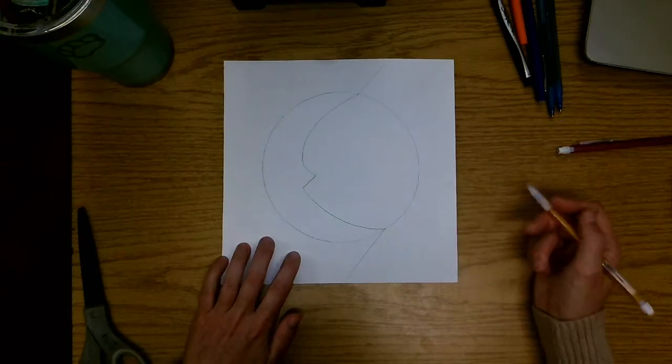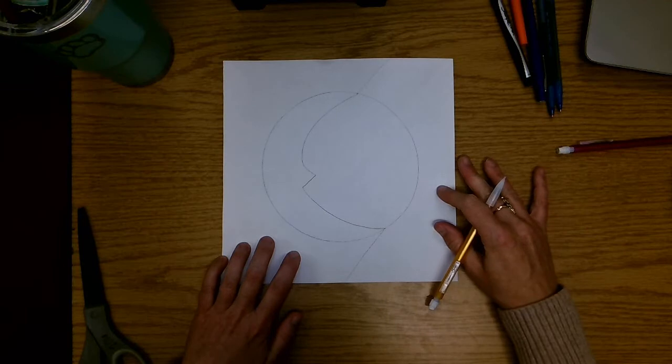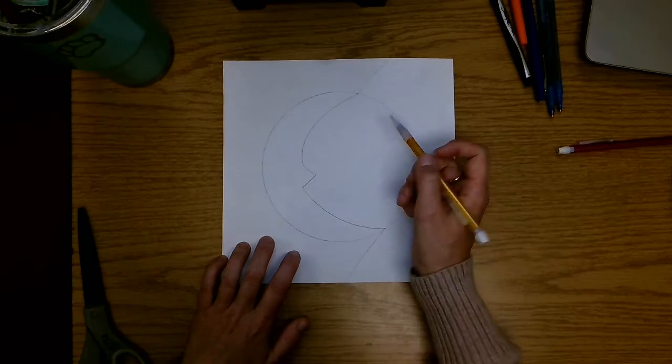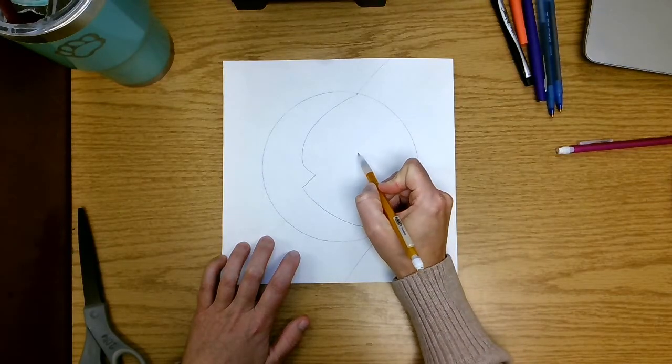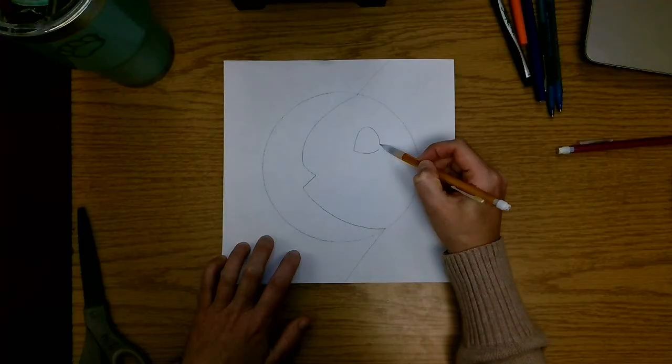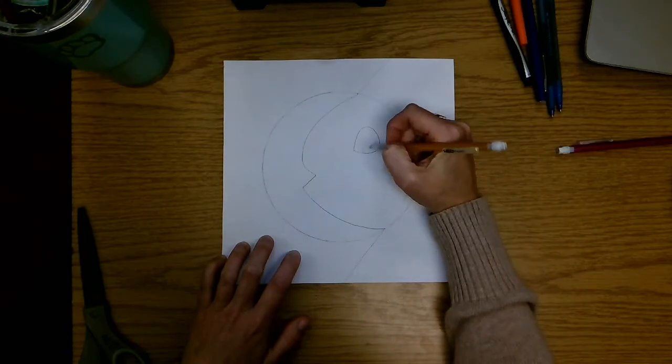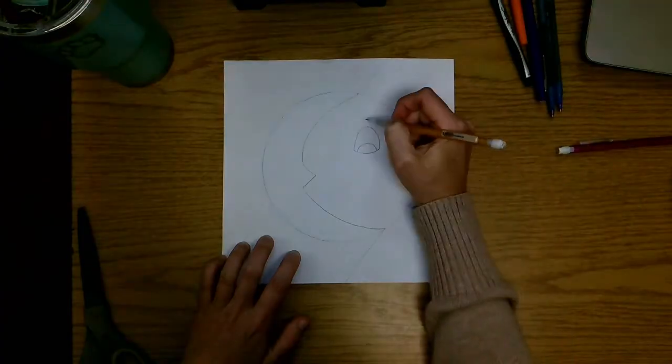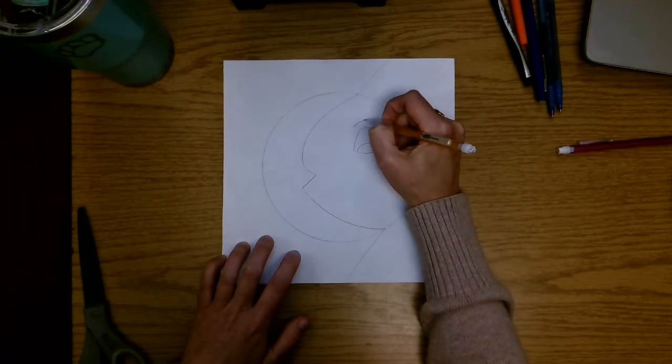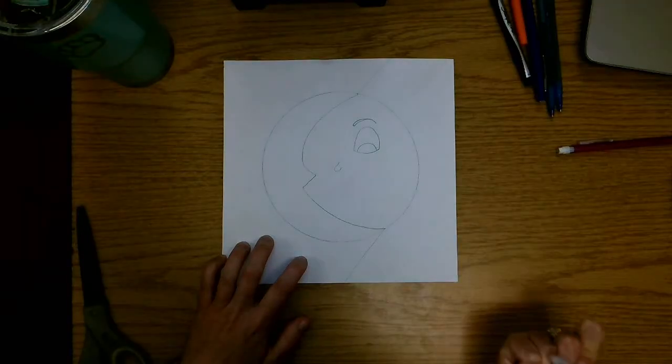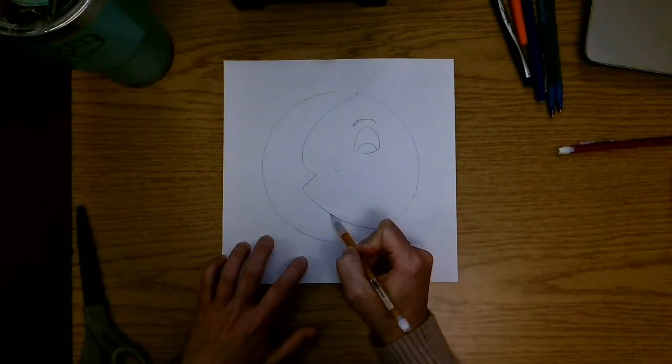Once you have done that, you can start decorating it. I'm going to start by adding an eye here in my sun. I'm going to give him an eyebrow here as well. I'm going to give him a little bitty nose and I'm gonna give him a mouth.